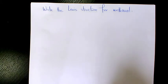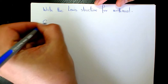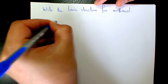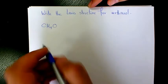What's up guys, this is Massey, welcome to another video. In this video I want to write the Lewis structure for methanol. Methanol is CH4O, this is the chemical formula for methanol.